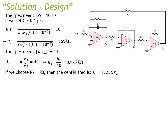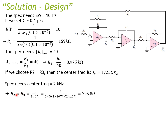If we choose R2 = R3, it simplifies the design. Then the center frequency becomes ω₀ = 1/(2π·C·R2). With the required frequency of 2 kilohertz, we calculate R2 = R3 = 795.8 ohms. In practice, you may need to compensate values so that R2 × R3 stays close to this design target squared.